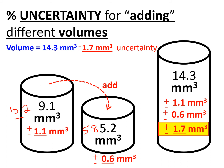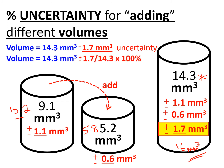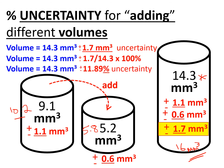We can also express this as a percentage uncertainty. It's the uncertainty of 1.7 divided by the measurement of 14.3 millimetres cubed times 100%, giving plus or minus 11.9% uncertainty. So the combined volume is 14.3 millimetres cubed, plus or minus 11.9%.